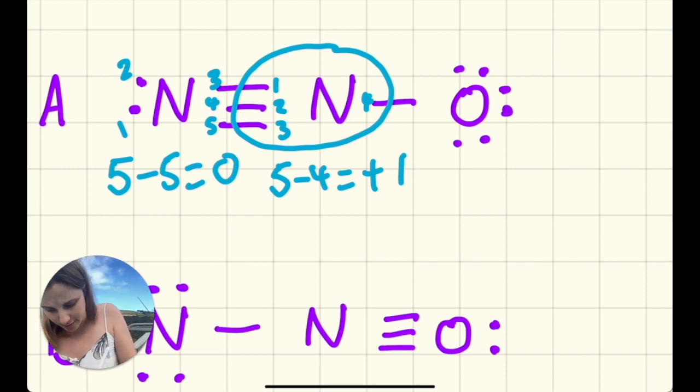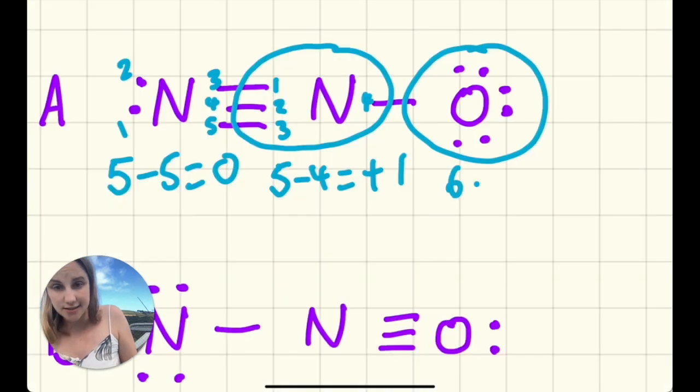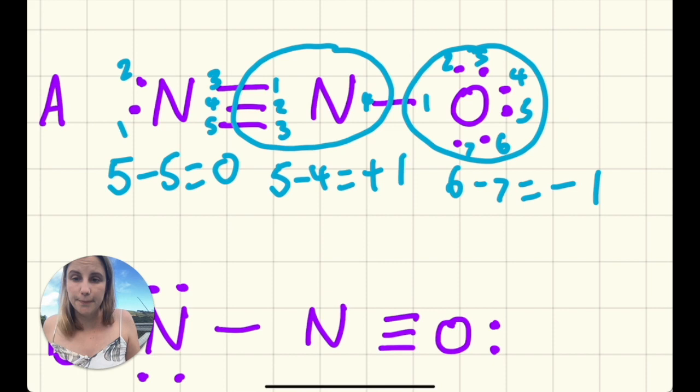I could do the same thing with the oxygen here. Remember, oxygen is in group 16, so it should have six electrons. We're gonna go six minus one, two, three, four, five, six, seven, so this gives me a minus one. It kind of makes sense because each of the dots, the lone pairs, belong entirely to the atom, and then the oxygen has real estate in half of the bonding pair. So we're just going to count that bond as one electron because it has one of the two.